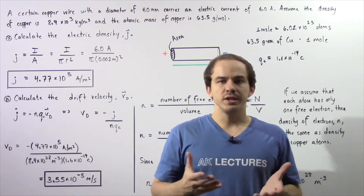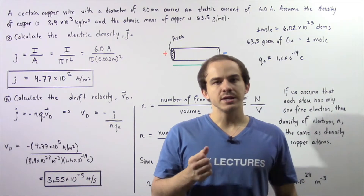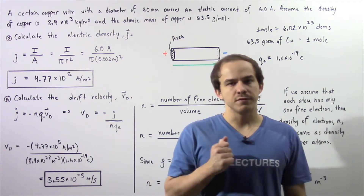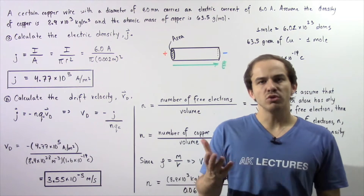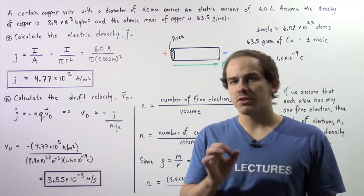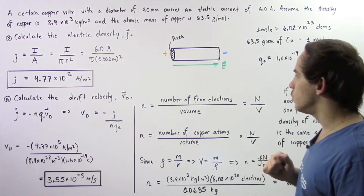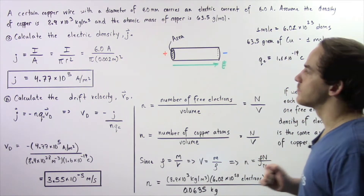In the previous lecture, we discussed electric density and drift velocity. Now we're going to apply those concepts into the following example.